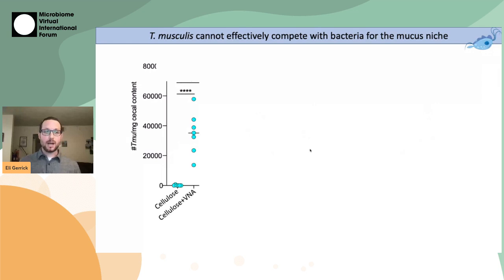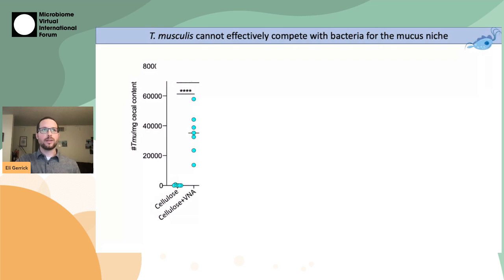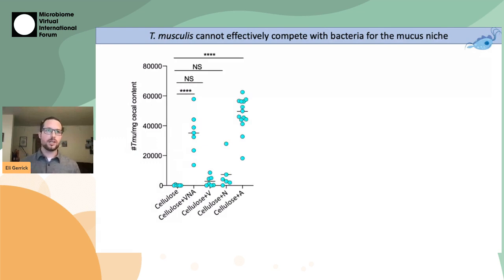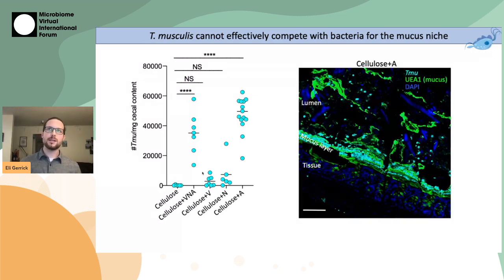My hypothesis for what causes that discrepancy was that competition with mucolytic bacteria was preventing the protists from growing efficiently in vivo. To test that, I repeated my fiber starvation experiments but added a condition in which I fed the mice vancomycin, neomycin, and ampicillin — an antibiotic cocktail to knock out the bacterial component of the microbiota. This showed that the antibiotic cocktail completely rescued T. musculus colonization during fiber starvation. Parsing apart the antibiotics showed that vancomycin and neomycin were dispensable, and ampicillin alone was 100% sufficient. Excitingly, T. musculus in ampicillin-treated mice was tightly co-localized to the mucus layer, consistent with ampicillin alleviating competitive pressure for that mucus niche.